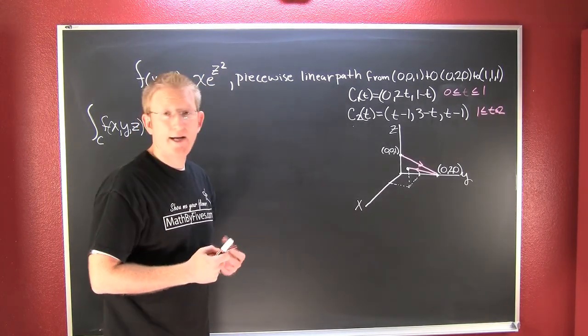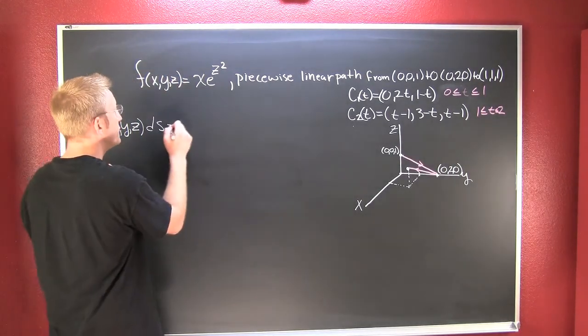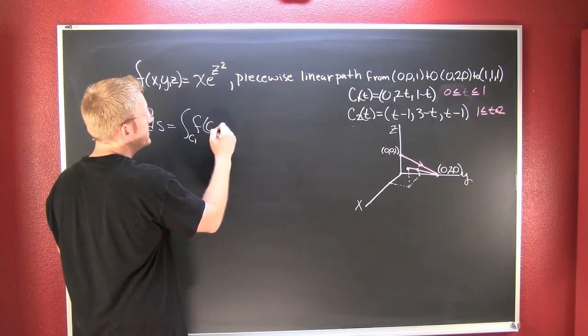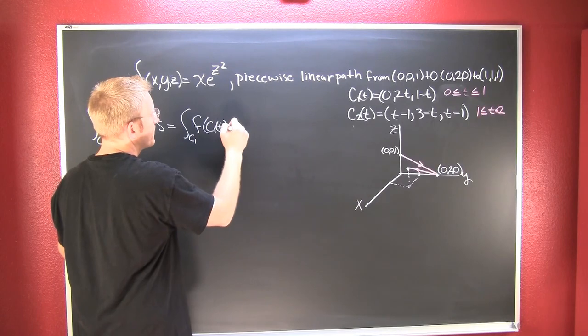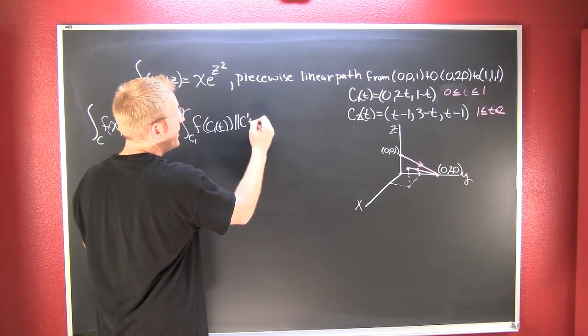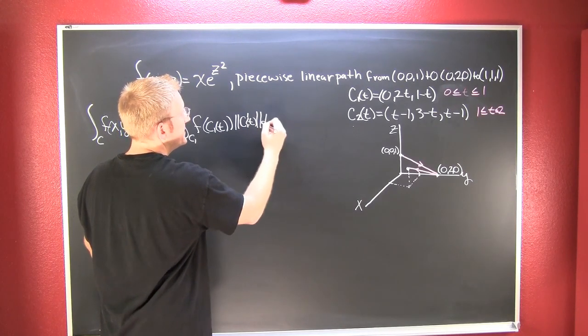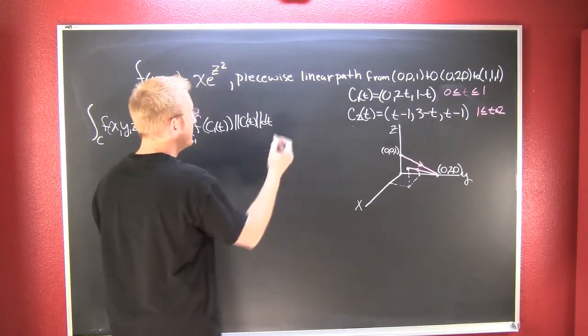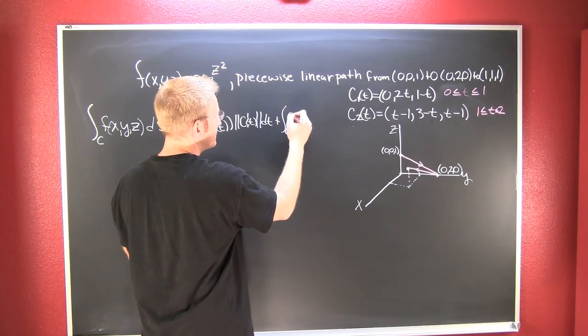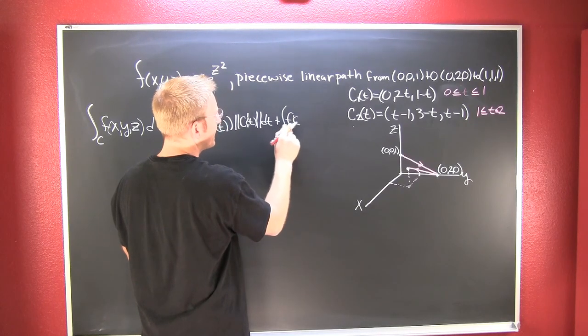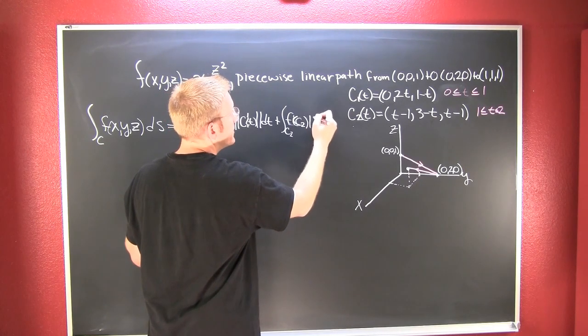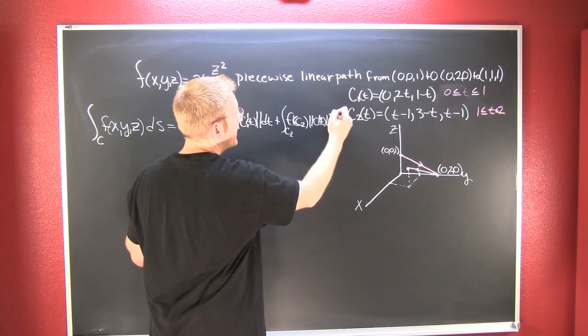So we see we have a piecewise path, so we want to take this integral in two pieces because these line integrals are additive along smooth paths. I can take this ∫c1 f(c1(t)) and multiply it by its ds, the magnitude of c'(t) dt, and I can add that to the integral along the second path.